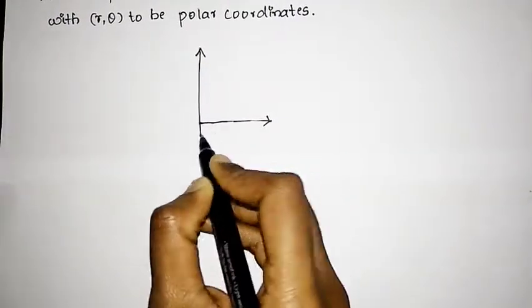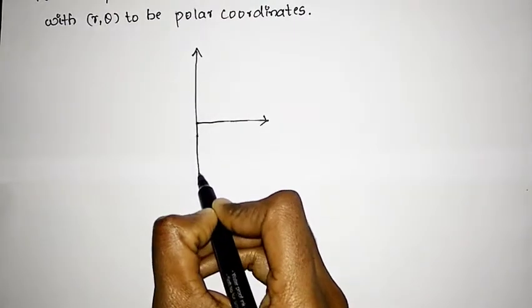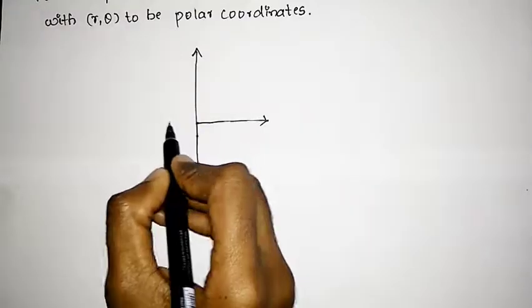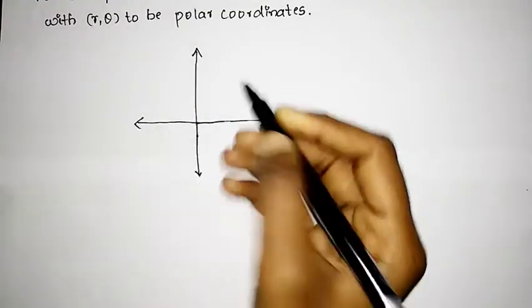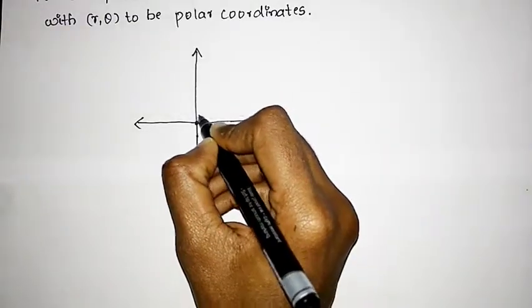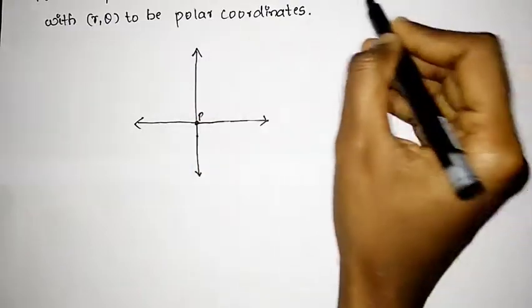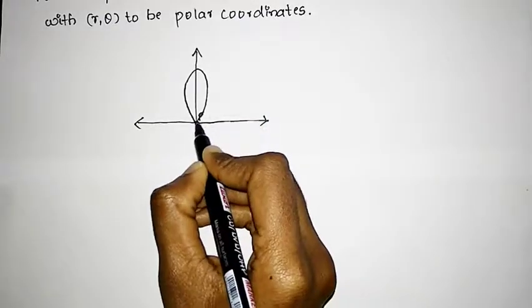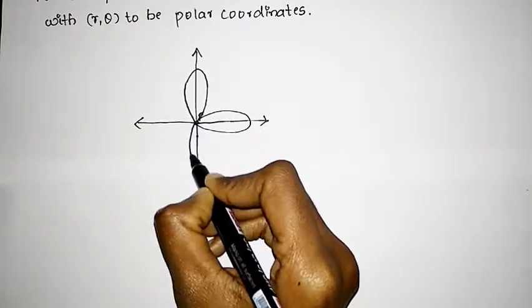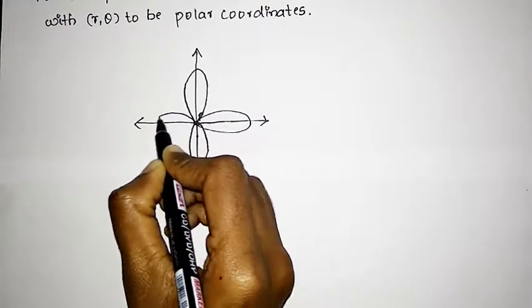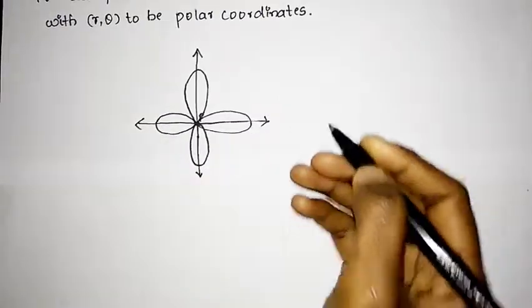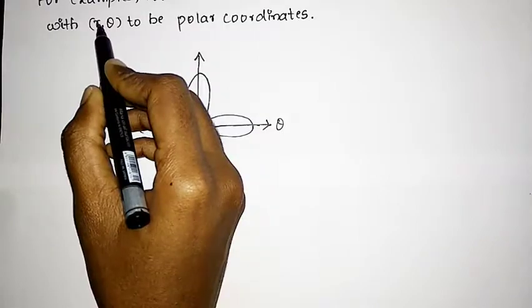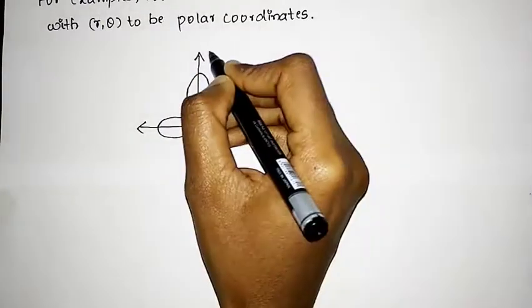We shall consider the four axes. We consider this to be the point P. Now, we have considered the four-leaves rose, so we shall consider the four leaves and the two coordinates. As we know, this is the point P, and we can consider this as theta — we have taken the two coordinates (r, theta).